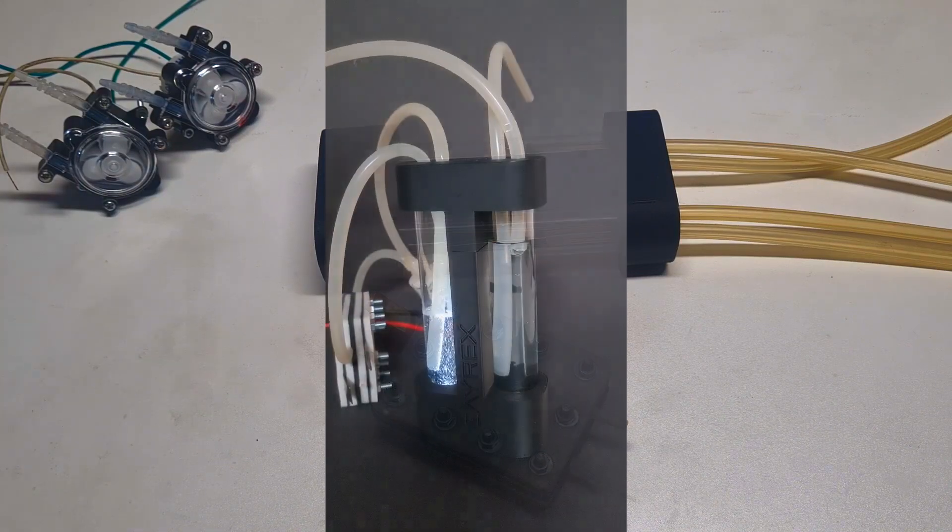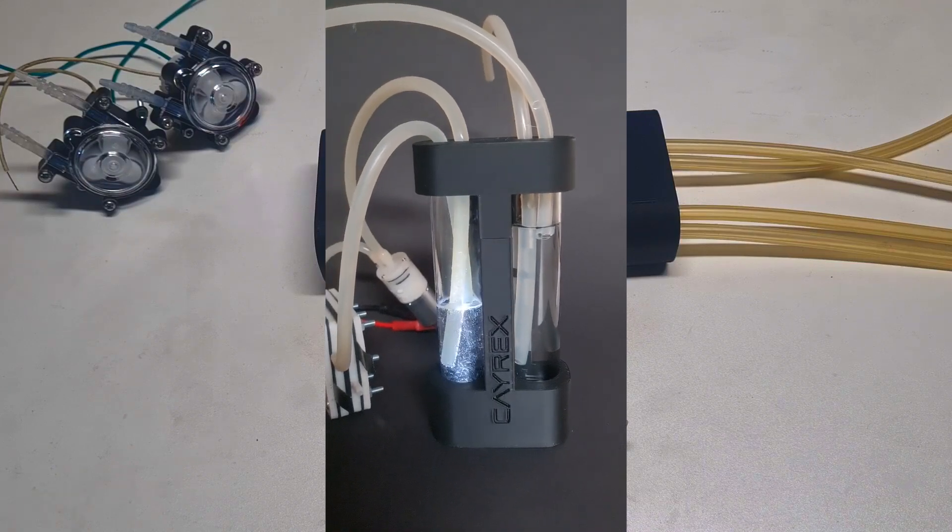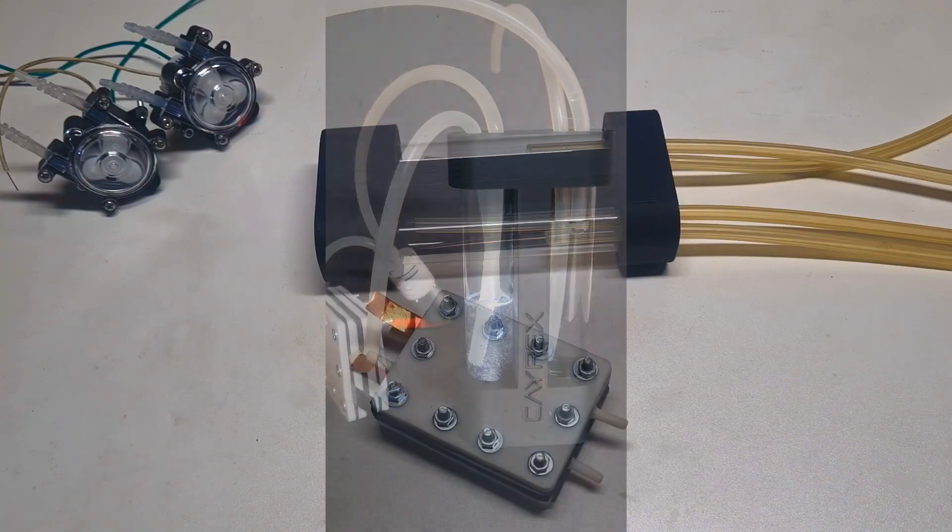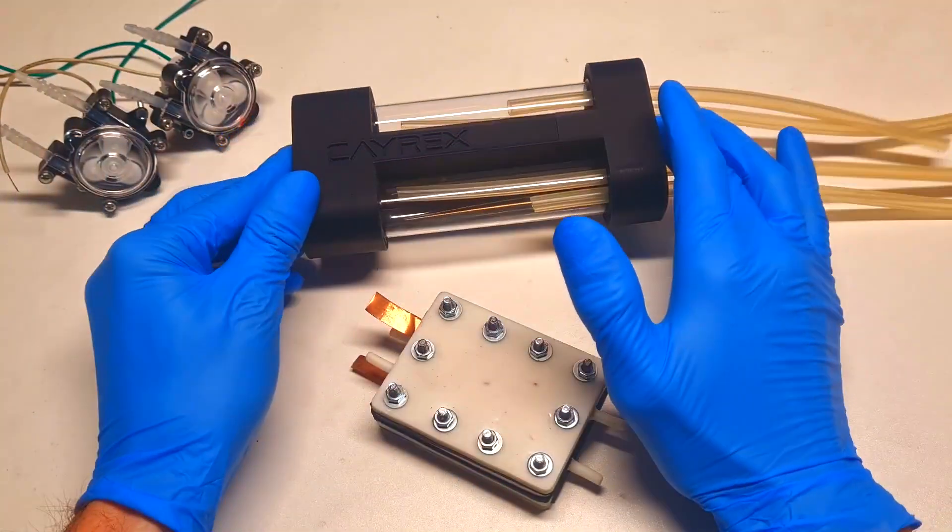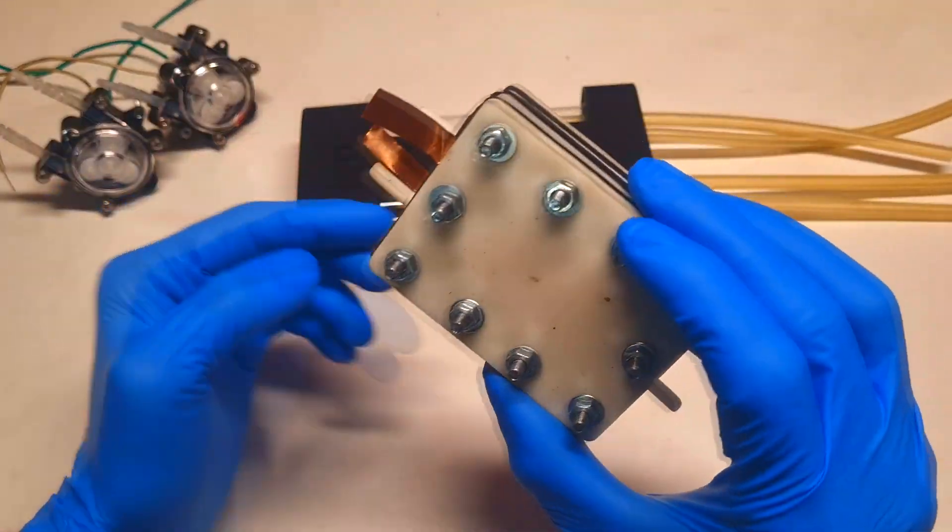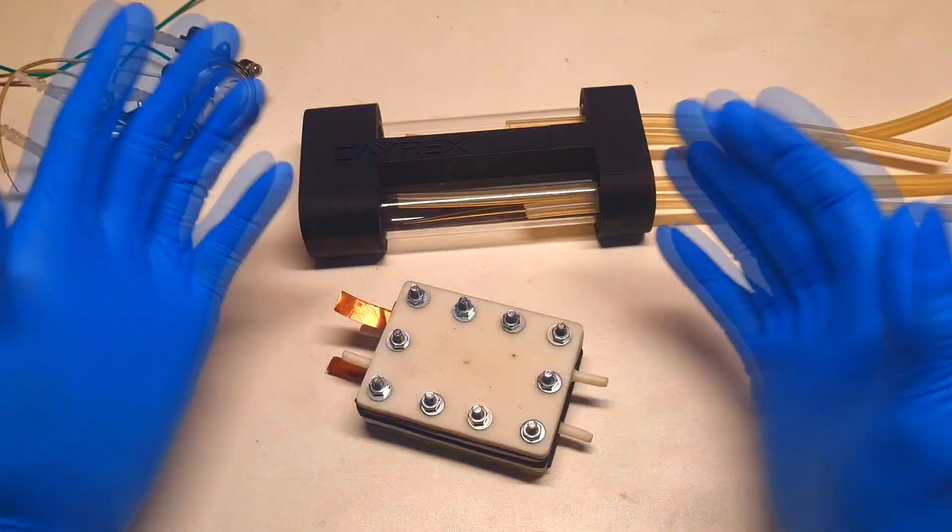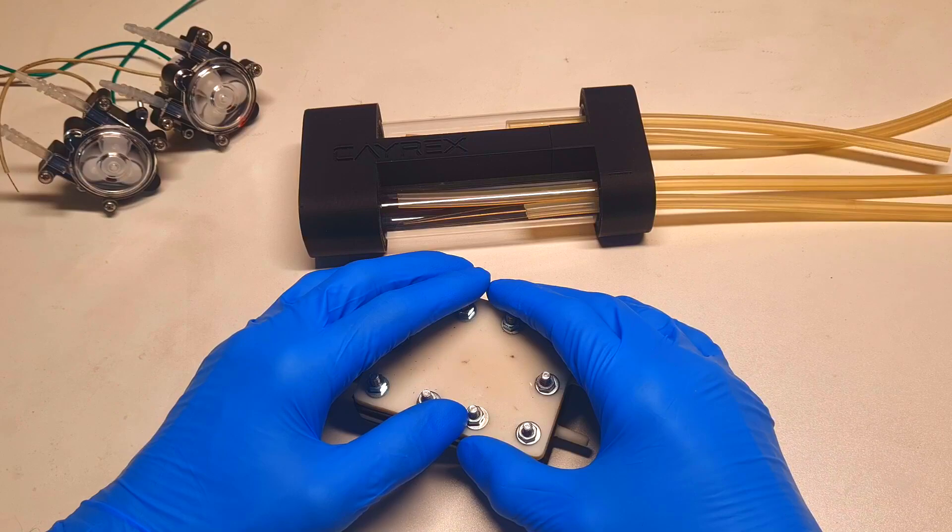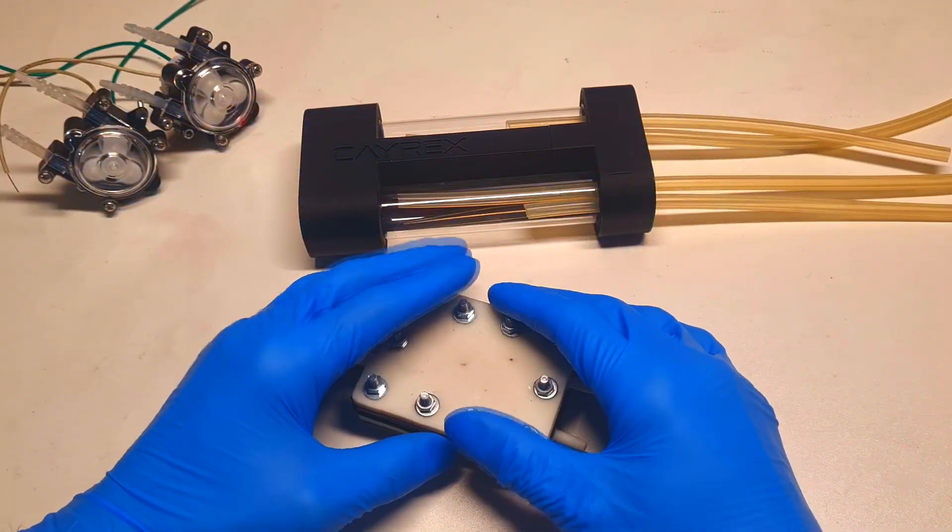If you remember some time ago, I started with this Vanadium Redox Flow battery project, where I already made some parts for the battery. For example, here I have these electrolyte tanks, here I have that cell and so on. But today in this video, I will put together the entire battery and in the end, I will see what I will get.